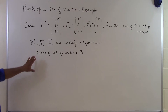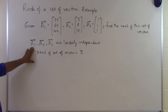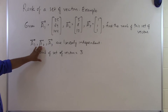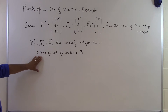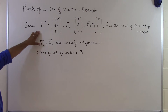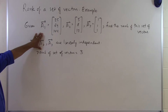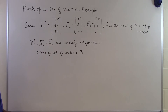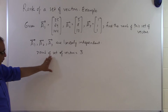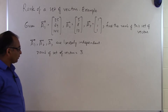Now keep in mind that you don't only simply count the number of vectors which are linearly independent, but you also have to look at the dimension of the vectors. The dimension of the vectors is 3, and the rank of the set of vectors has to always be less than or equal to the dimension of the vector, which in this case is 3 — so we're all right here.